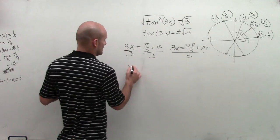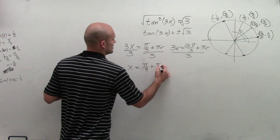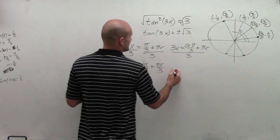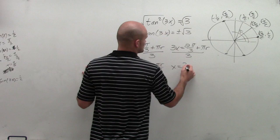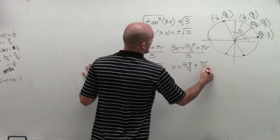So in doing this, what we're going to have is now x equals pi over 9 plus pi r over 3. And here we're going to have x equals 2 pi over 9 plus pi r over 3.